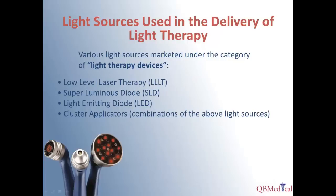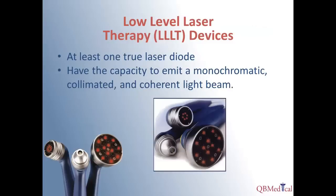While low-level laser therapy is one form of light therapy, there are other forms available as well. These commonly include superluminous diodes and light-emitting diodes, which may be in the same or similar wavelengths to a laser; however, they will not have as much penetration due to being non-collimated and/or non-coherent. There are also cluster applicators available in some devices, which use a combination of laser, LED, and SLD. To be considered a cold laser device, there must be at least one true laser diode on the applicator that is monochromatic, collimated, and coherent.